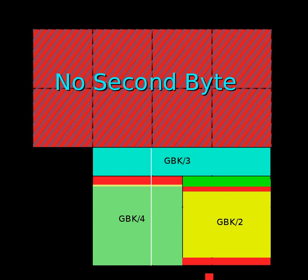In 2000, the GB18030-2000 standard was released, superseding yet maintaining compatibility with GBK 1.0. It increased the number of definitions of Chinese characters and extended the number of possible characters through the implementation of 4-byte character spaces. The subset of GB18030 consisting of 1-byte and 2-byte characters is sometimes also referred to as GBK. Mapping to Unicode has been slightly changed, though, as some characters are now defined in Unicode.